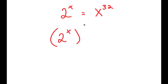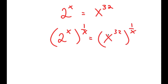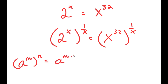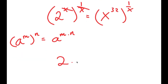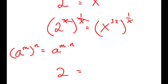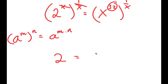So I get 2 to the power of x to the power of 1 over x, is equal to x to the power of 32 to the power of 1 over x. The reason I did this is because if I have something in the form a to the power of m to the power of n, this is equal to a to the power of m times n. So x and 1 over x cancel out, leaving just 2 on the left-hand side. And on the right-hand side, 32 and 1 over x multiply to get 32 over x.